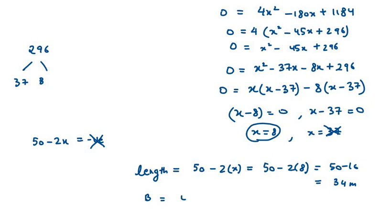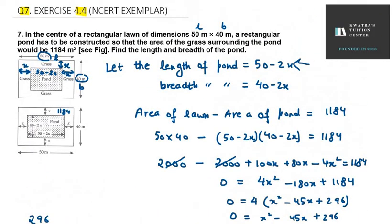Now we need to find breadth. Breadth is 40 minus 2x. So 40 minus 16. 40 minus 16 is 24 meter. So length is 34, breadth is 24 meter. So that's your solution to question number 7.